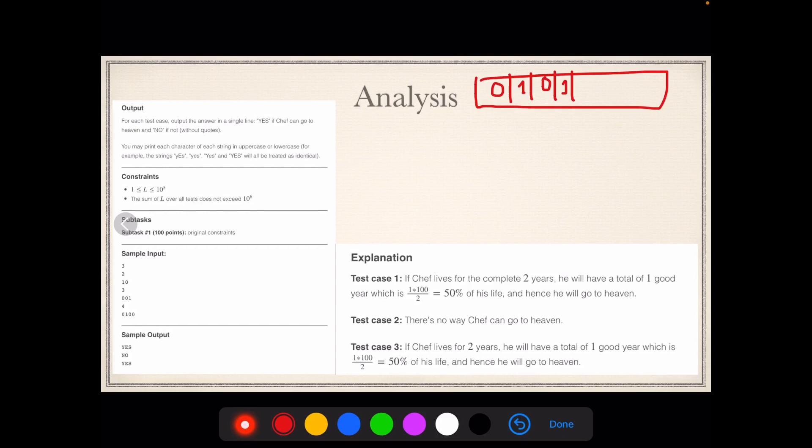See, we are given a string and the string consists of zeros and ones. We'll have to see how many ones are there initially. Suppose you are given a string of length seven, and you see out of the seven places you have, you did only three. Now three would account for somewhat less than 50%.